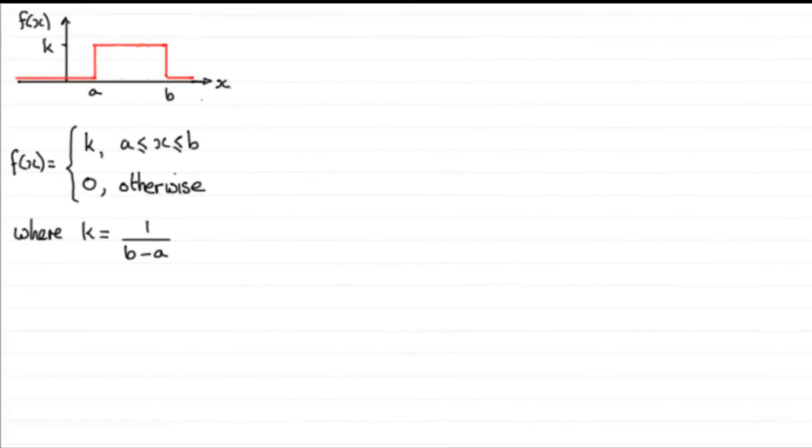Hi, welcome to the third video in my series on the continuous uniform distribution. In the previous videos, we looked at the shape of it and the fact that its probability density function is defined as such, where we've got this constant k equal to 1 over b minus a.